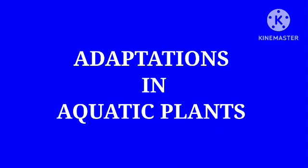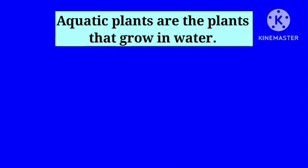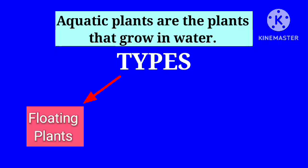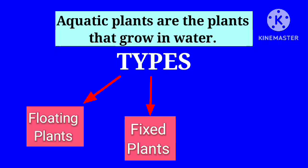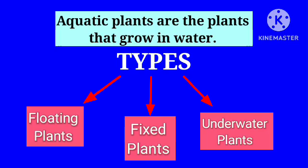Adaptations in Aquatic Plants. Aquatic plants are the plants that grow in water. These plants can be further divided into three types: floating plants, fixed plants, and underwater plants.